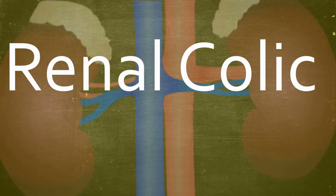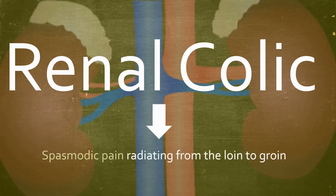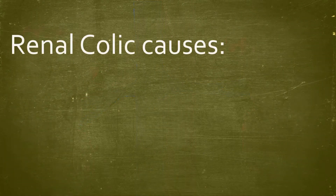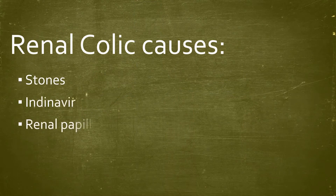Renal colic is defined as spasmodic pain radiating from the loin to groin. There are four general causes of renal colic. These include stones, indinavir, renal papillary necrosis, and blood clots.